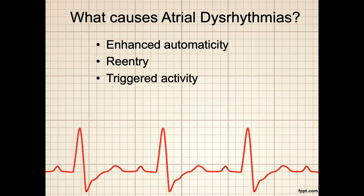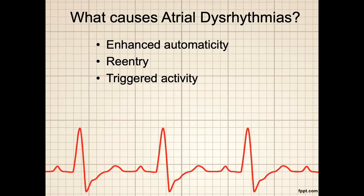Causes of increased automaticity include extracellular factors such as hypoxia, acidosis, hypocalcemia, and digoxin toxicity, and conditions in which the function of the heart's normal pacemaker, the SA node, is diminished. For example, increased vagal tone or hypokalemia can increase the refractory period of the SA node and allow for atrial fibers to fire impulses.